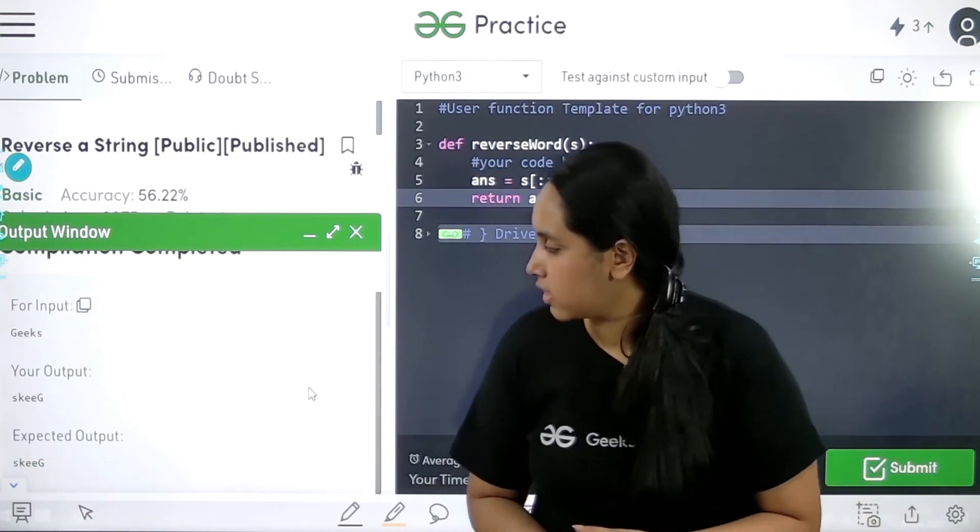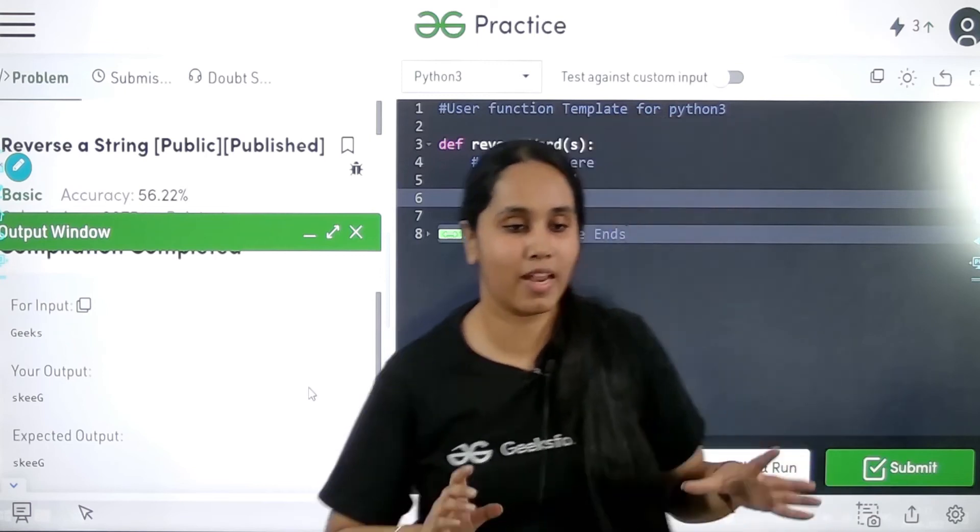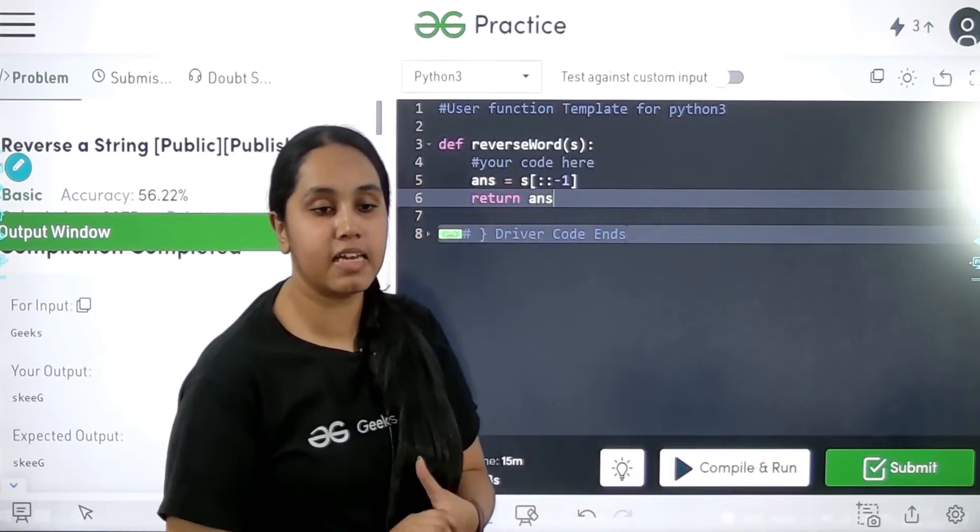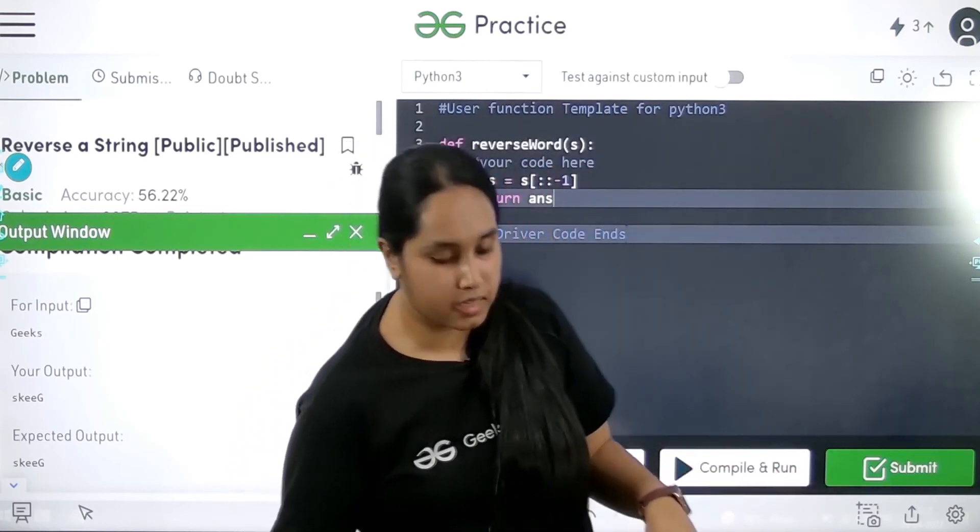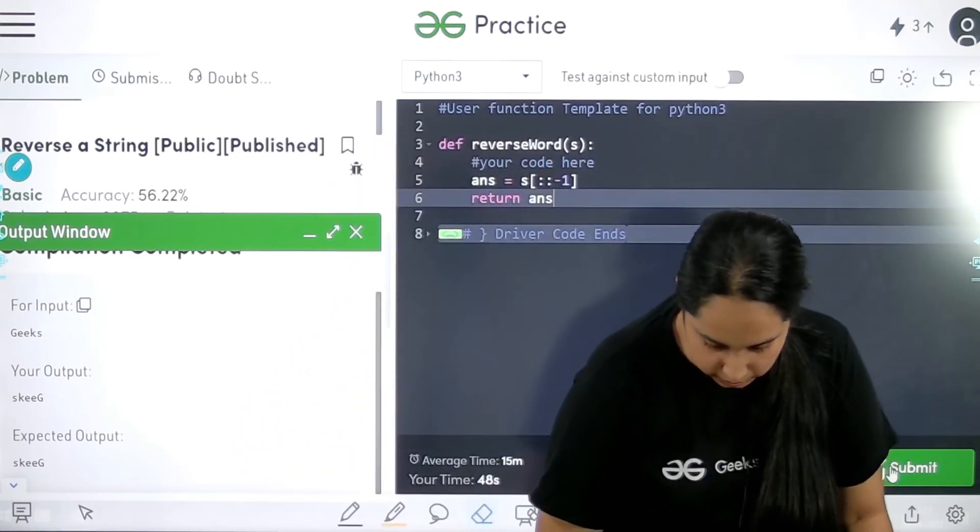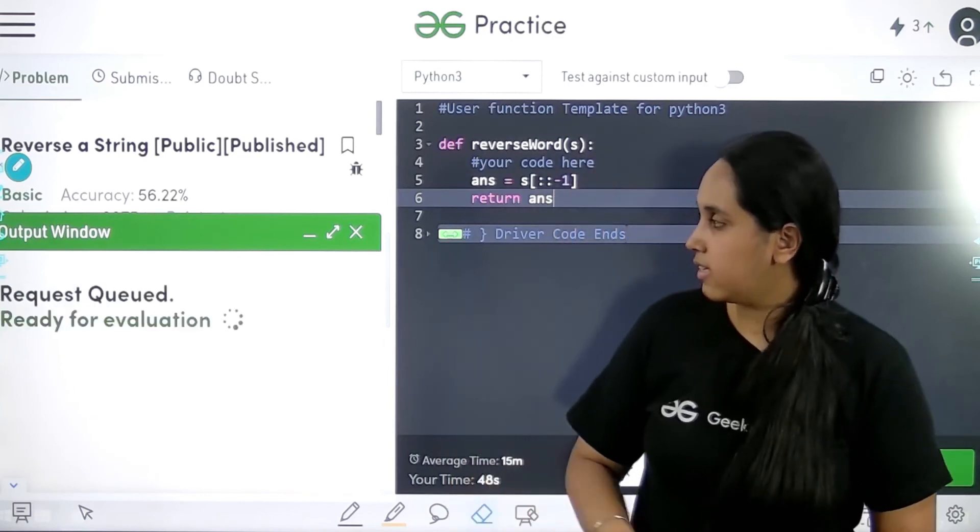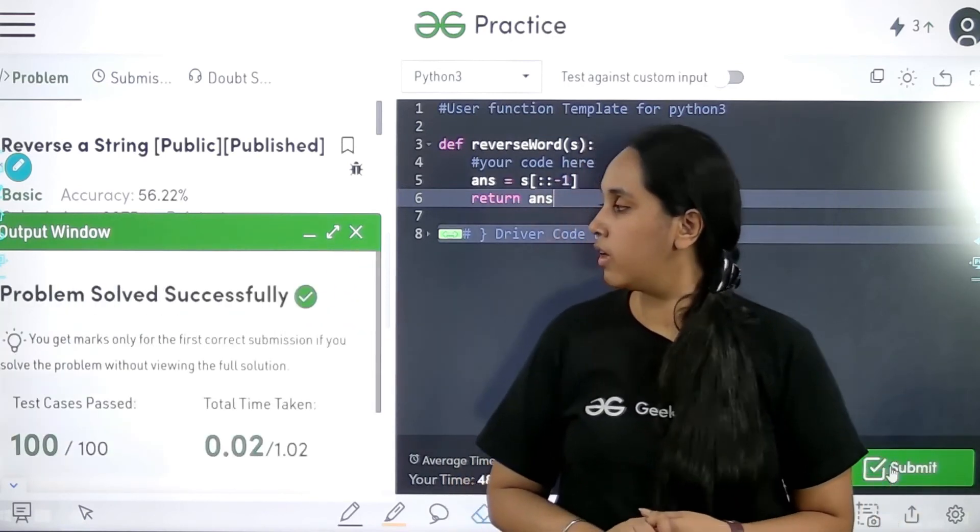So my output is matching the expected output but right now it has only passed the test case. I need to be sure that all the test case is passed. So I would click on submit now. So let me click on submit. Let us wait, it is being test. See, the problem is solved successfully.